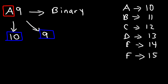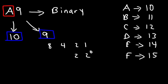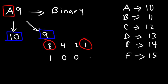Let's start with 9. We'll use the place values 8, 4, 2, 1 — where 1 is 2 to the 0, 2 is 2 to the 1st, 4 is 2 squared, and 8 is 2 to the 3rd power. 9 is the sum of 8 and 1. So we replace 8 with a 1, the unused 4 and 2 with 0s, and the 1 with a 1.